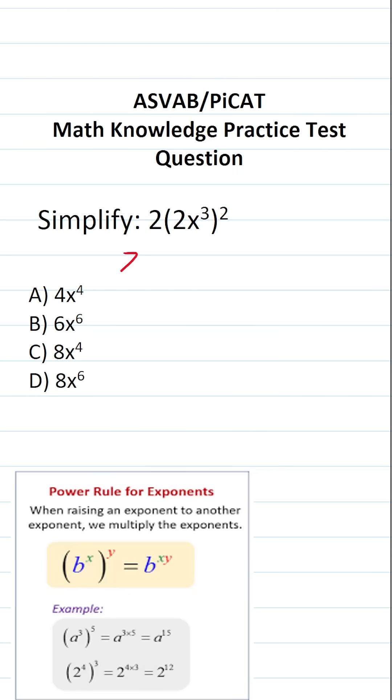Again, on the ASVAB and PICAT, you're not given a reference sheet or a calculator. For that reason, I'd recommend you get in the habit of copying things down and working them out on your own scratch paper.